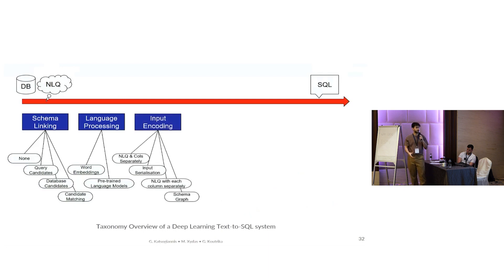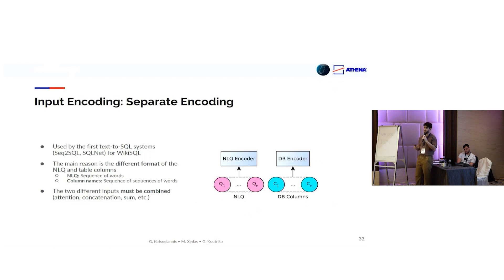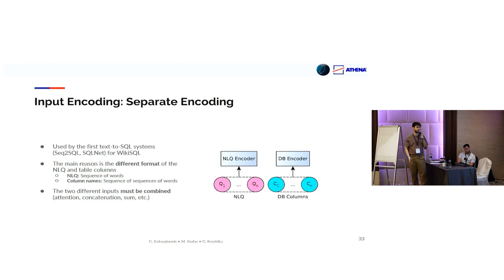Now that we have representations for our inputs, we look into how we encode them. The first systems used separate encoding, with one encoder for the question and a different encoder for the database, since these inputs have a different shape. At some point later in the network, these two representations must be combined using an attention mechanism, summarization, concatenation, and so on. However, more recent models that rely on pre-trained language models use serialization for encoding their inputs, since these kinds of inputs are better handled by pre-trained language models.